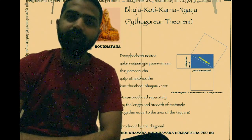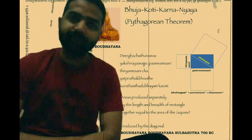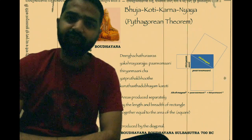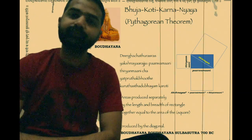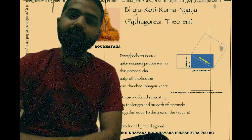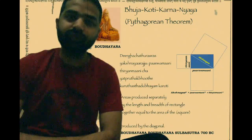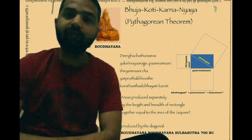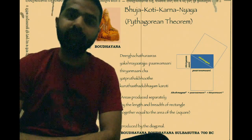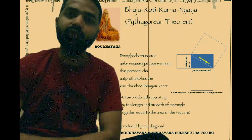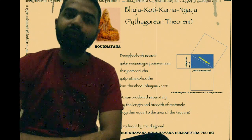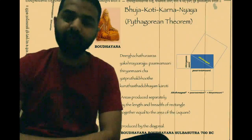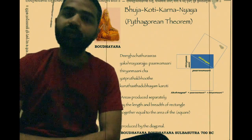The Sulba Sutras come under the Kalpa Shastras. The word Sulba itself has a derivation from the root word meaning measurement. There are seven different types of Sulba Sutras: Baudayana Sulba Sutram, Abasthambha Sulba Sutram, Katiayana Sulba Sutram, Manava Sulba Sutram, Maitrayana Sulba Sutram, Varaha Sulba Sutram, and Vadula Sulba Sutram. Of all the Sulba Sutras, the Baudayana Sulba Sutram, written by Maharishi Baudayana, is considered to be the oldest among them.